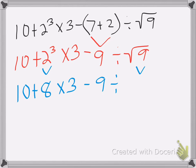Okay, next step, multiply and divide from left to right. So we're going to multiply and divide. Eight times three is 24. Nine divided by three is three. Now I can drop the rest of them.